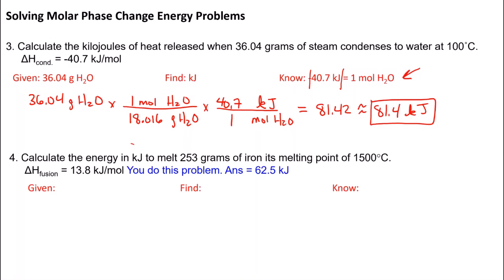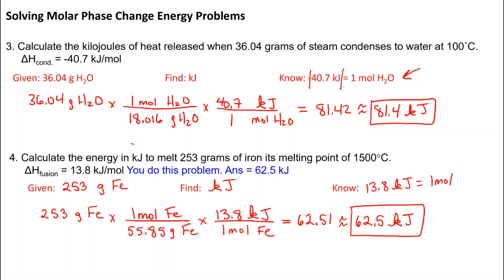You're going to work the next problem. Calculate the energy in kilojoules to melt 253 grams of iron at its melting point of 1500 degrees Celsius. You're given a delta H of fusion. Pause the video and work the problem. If you got 62.5, you know you did it right.